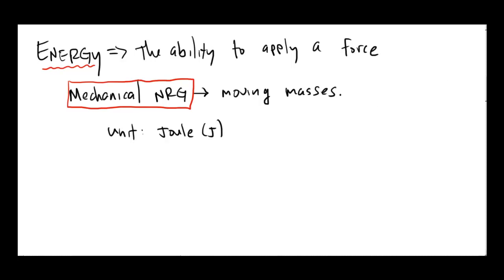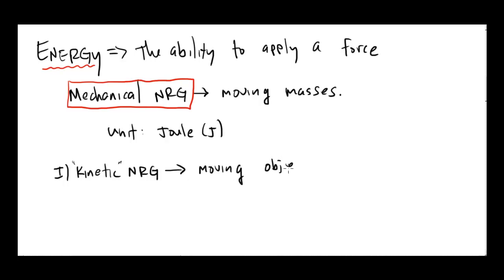One basic type of mechanical energy — and many of you will find this familiar — is called kinetic energy. Kinetic energy is a subcategory of mechanical energy, and it's maybe the most obvious example. The word kinetic means associated with motion, so kinetic energy is the energy that a moving object has. If I throw a baseball or drive my car, those moving objects have kinetic energy.